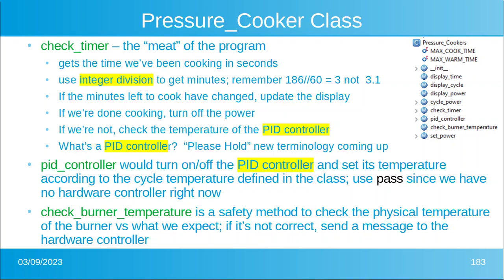Check burner temperature is a safety method to check the physical temperature of the burner versus what we expect. If it's not correct, then we're going to send a message to the hardware controller. So that acts as a redundant check on the temperature, which is important. We don't want to set the food on fire or the house on fire.